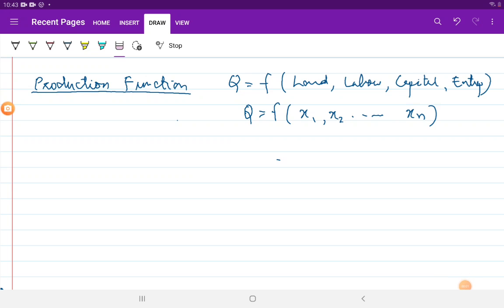Just as you have a utility function on the consumer's side, you can think of the production function on the producer's side. Here I have used the symbol Q to represent total product or total output produced, and that will always be a function of the various inputs that have been applied.